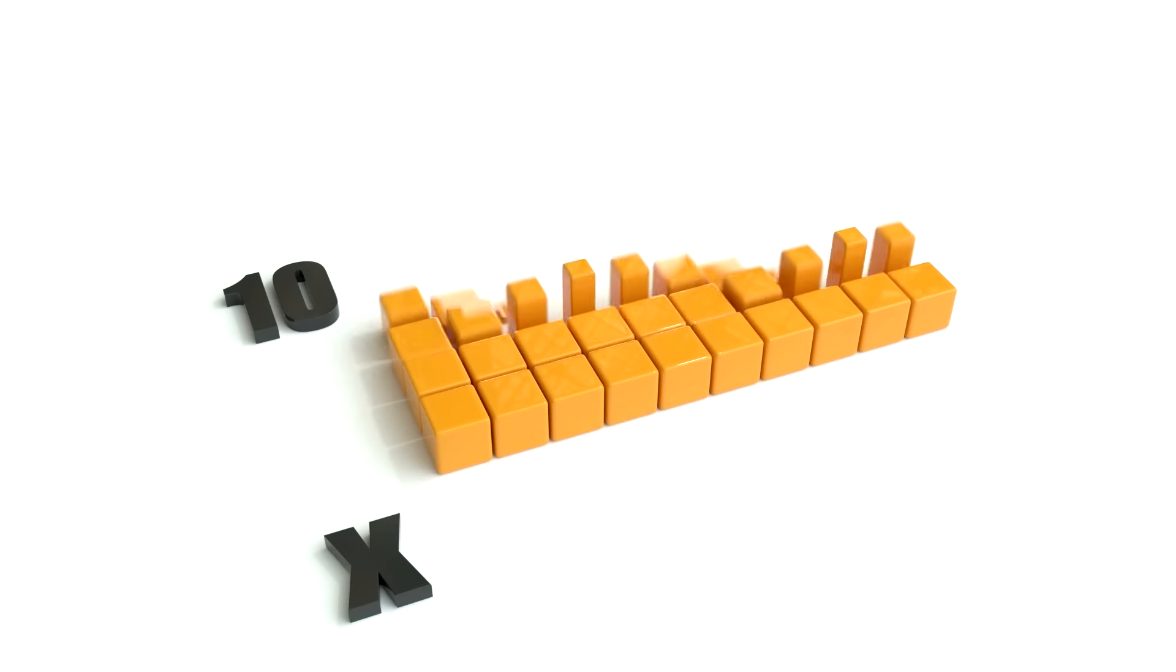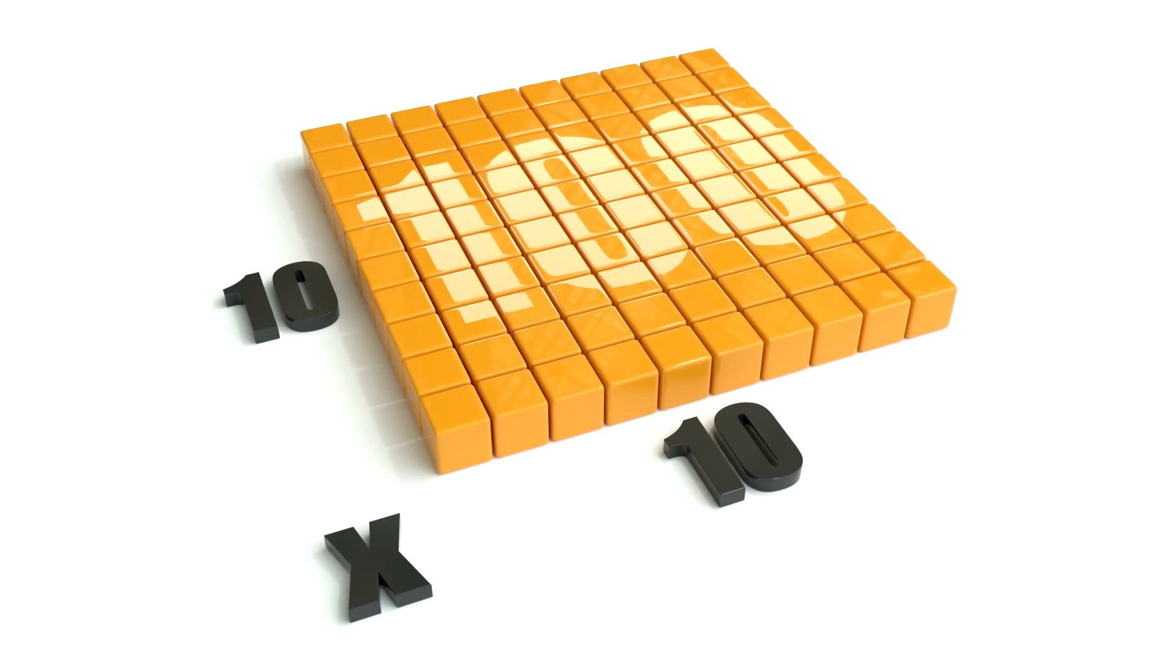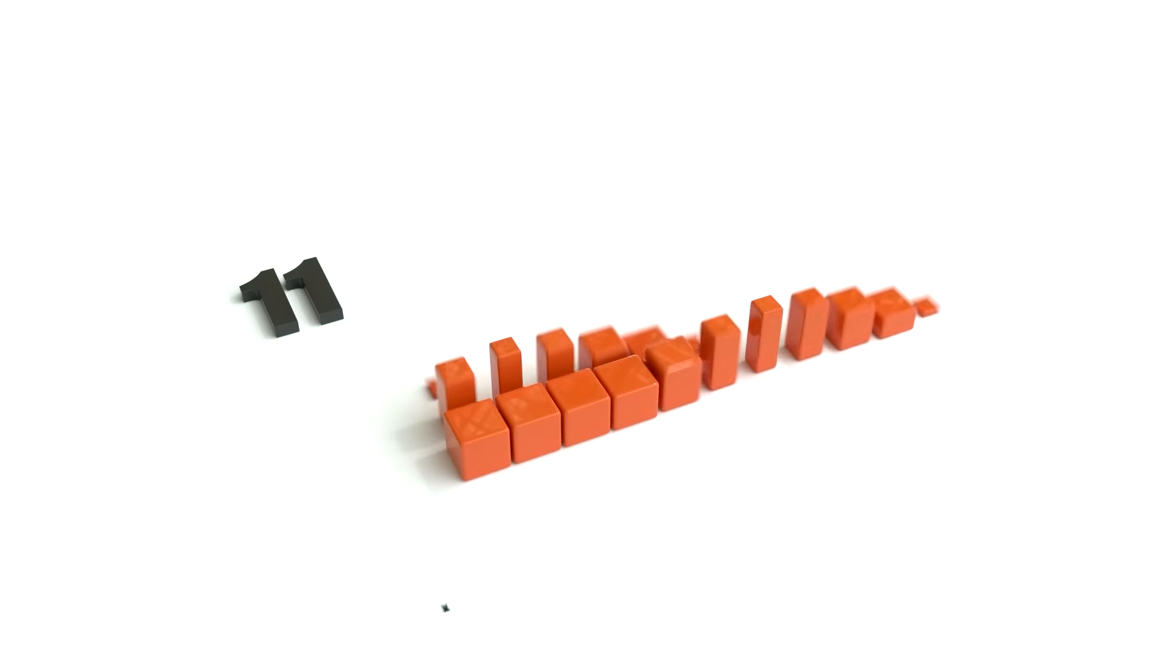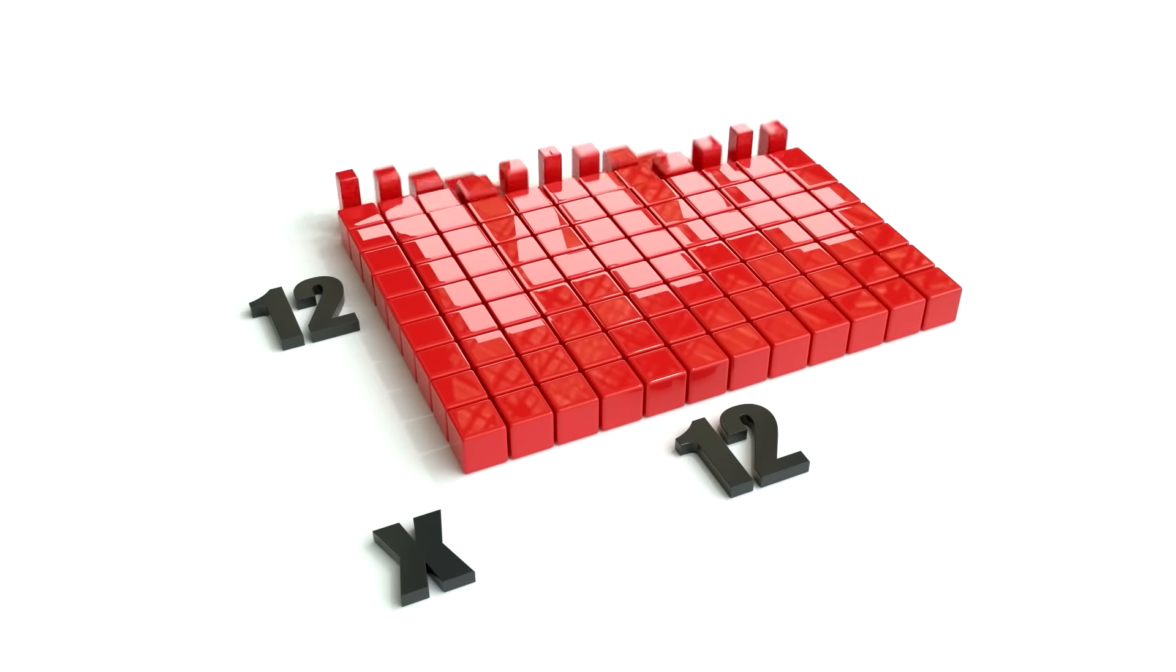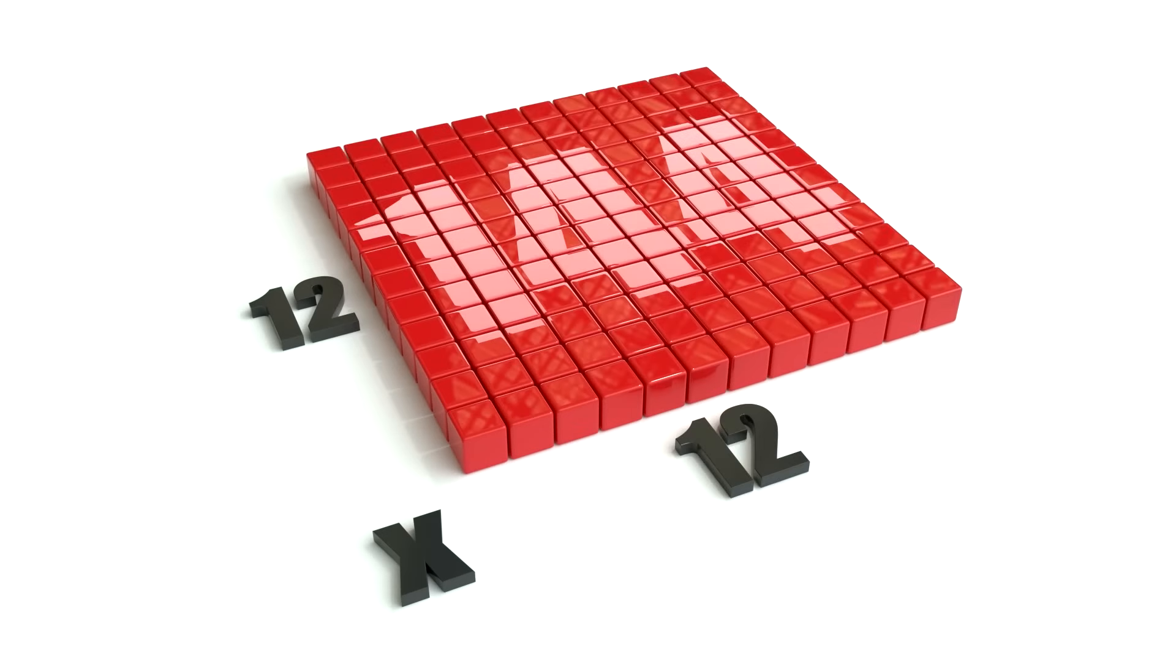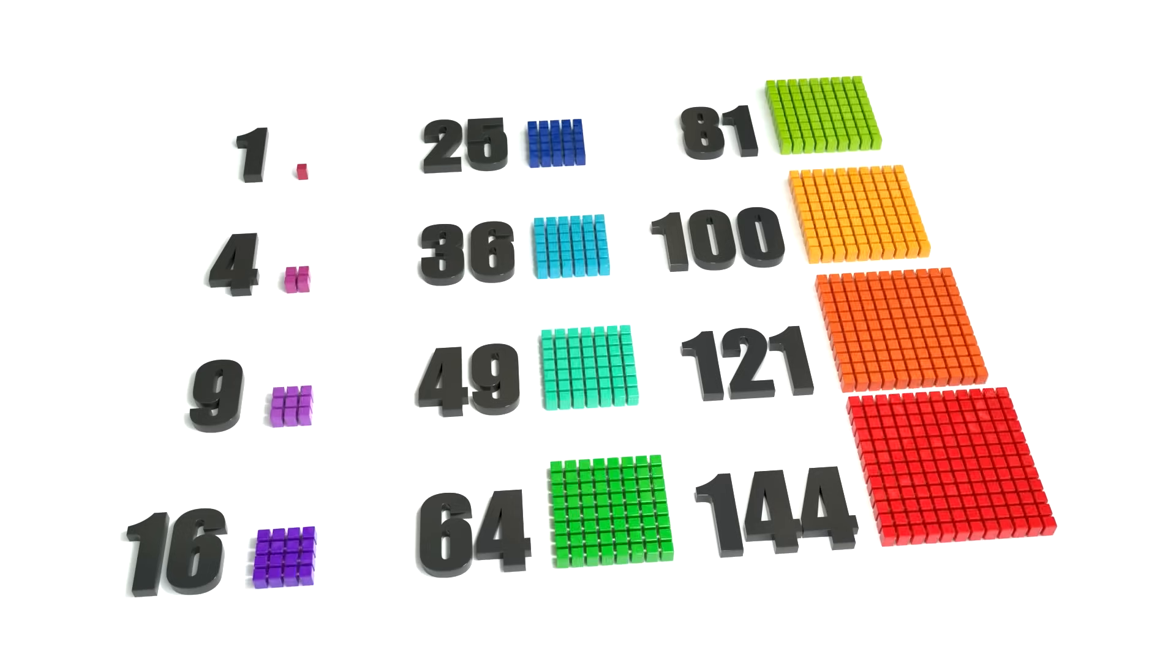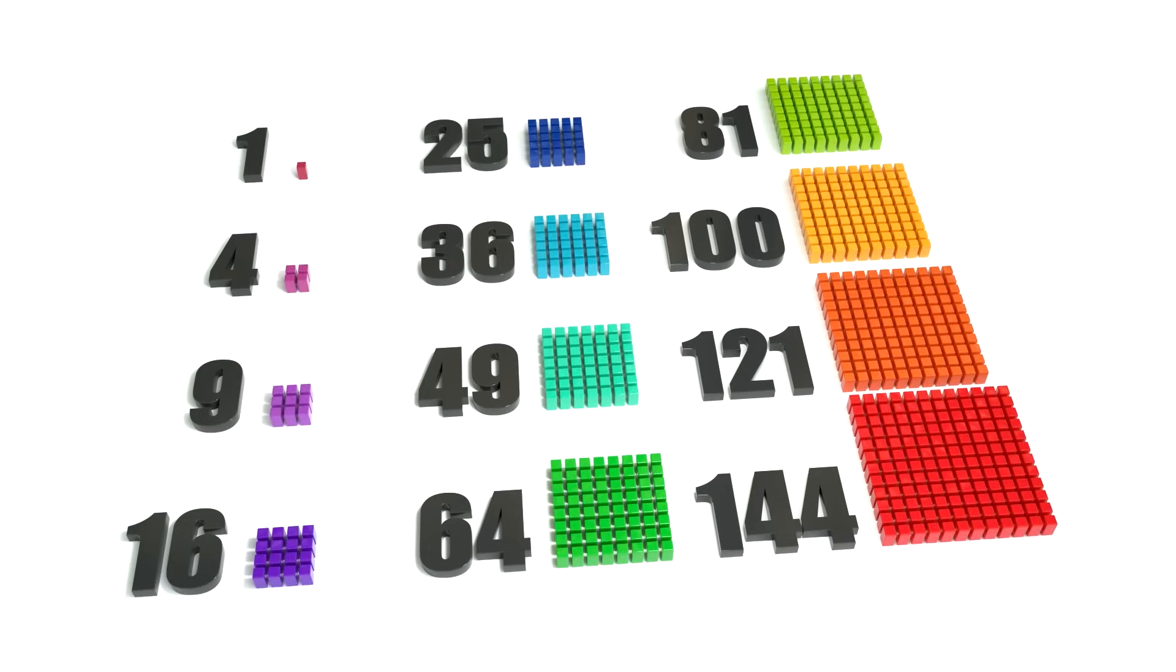Ten times ten is one hundred, eleven times eleven is one hundred and twenty-one, twelve times twelve is one hundred and forty-four. We are square numbers.